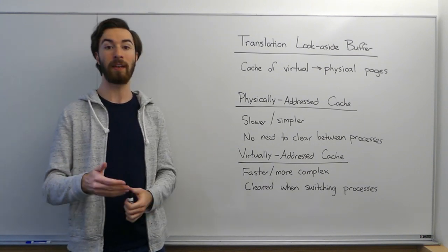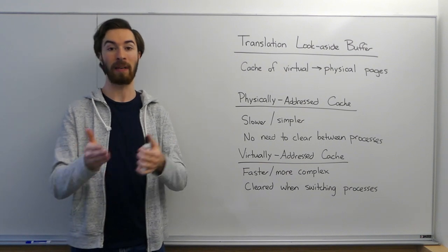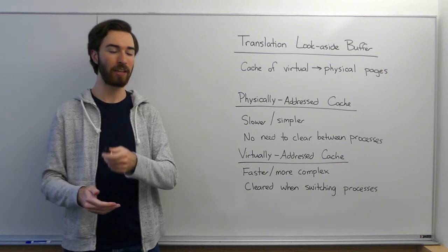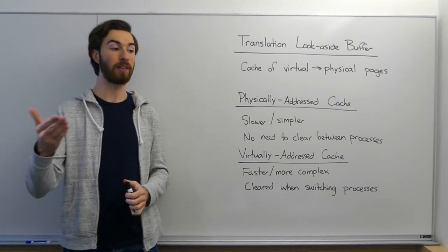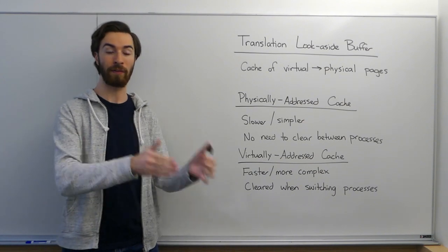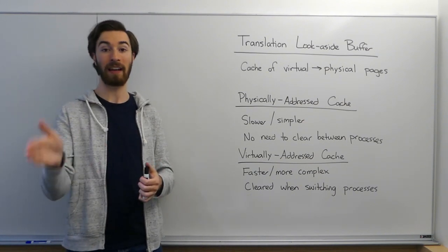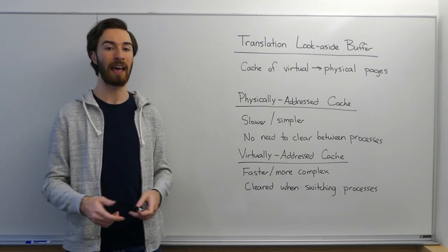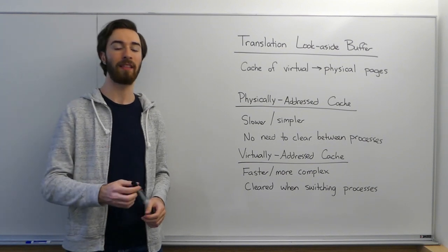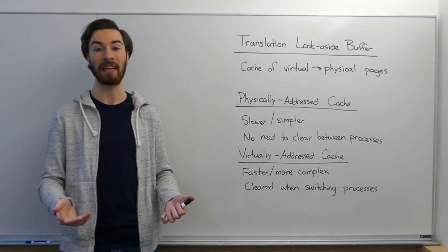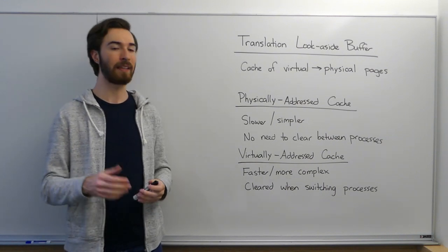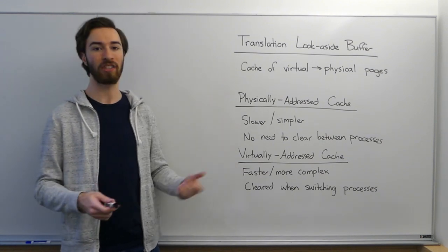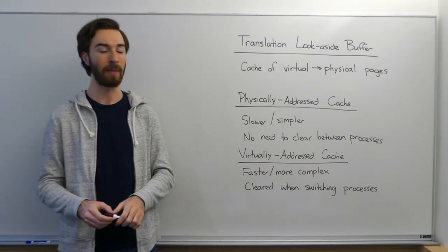This is useful because when we're thinking about translating a virtual page to a physical page normally, we need to do a page table walk. And the problem with the page table is that the page table itself is stored in memory. So when we want to translate a virtual page to a physical page, we need to access memory, and depending on how many levels our page table has, we may need to access memory multiple times. And if our page table itself isn't cached, then just translating the address from a virtual address to a physical address can take a lot of time. The translation look-aside buffer is a cache specifically designed to remove that latency, and since it's a cache, it's usually a lot faster than doing all those sequential memory accesses.